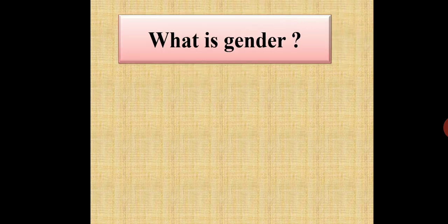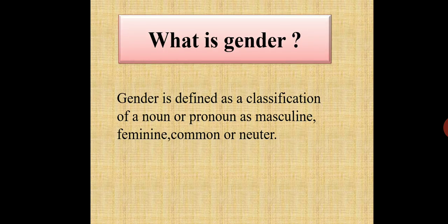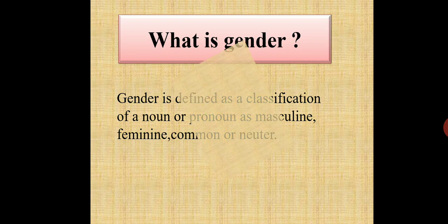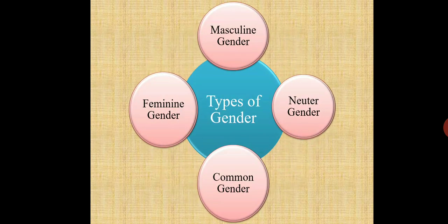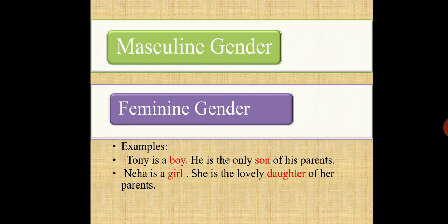Let me tell you what is gender. Gender is defined as a classification of a noun or pronoun as masculine, feminine, common or neuter. Let us see the types of gender. Nouns are classified into four types: masculine gender, feminine gender, common gender and neuter gender. Today we are going to learn about masculine gender and feminine gender.